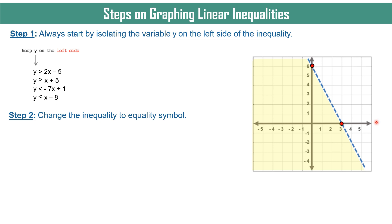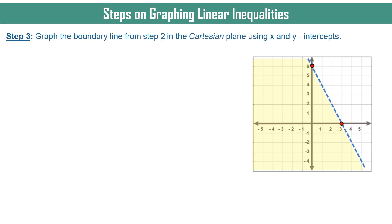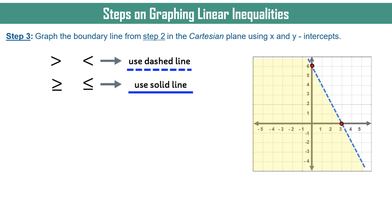Second step: change the inequality to an equality symbol. Using these four inequalities, you just remove the inequality symbols and change them with an equal sign. The purpose is so that we can solve for the intercepts. Step 3: graph the boundary line in the Cartesian plane using X and Y intercepts. If the symbol is greater than or less than, use a dashed line since that part is not included in the solution. If it is greater than or equal to, or less than or equal to, use a solid line — it means the line is included in the solution.